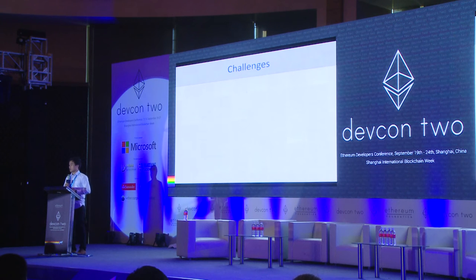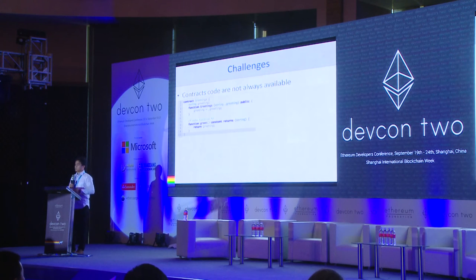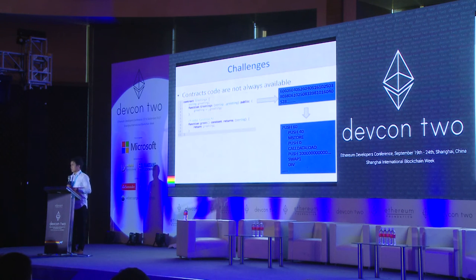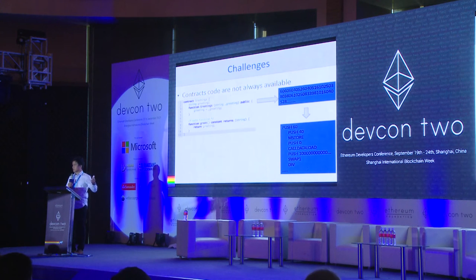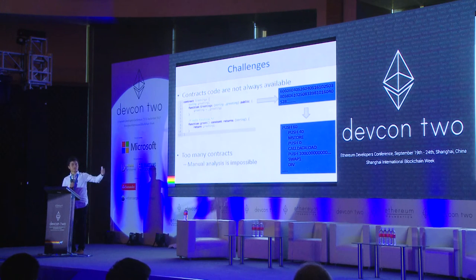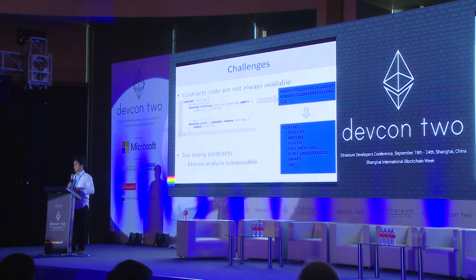There are several challenges. First, contract source code is not always available. What is eventually stored on the blockchain is binary code compiled from the high-level code. You can use a disassembler to translate the binary into bytecode, but it's still really hard to make sense of it. Second, we have so many smart contracts to analyze — even someone skilled at reading bytecode would take several years to analyze all 120,000 contracts.